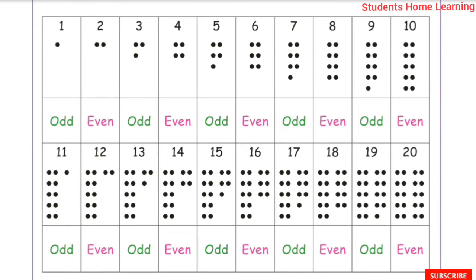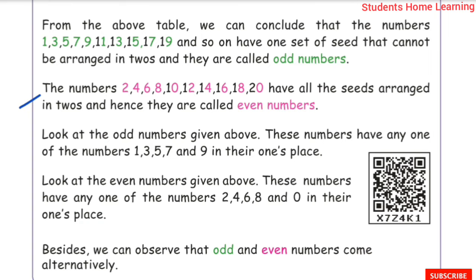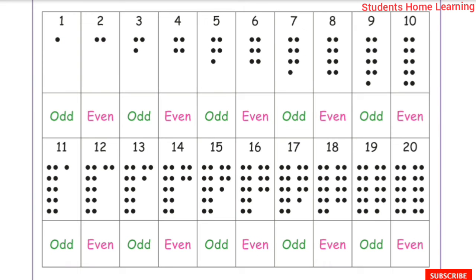The odd numbers column shows: 1, 3, 5, 7, 9, 11, 13, 15, 17, 19. The even numbers are: 2, 4, 6, 8, 10, 12, 14, 16, 18, 20.